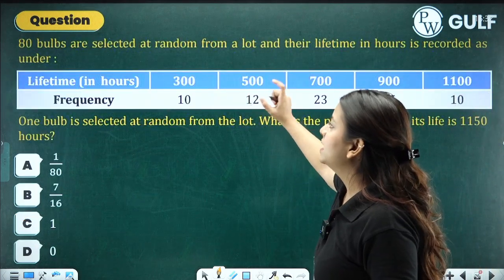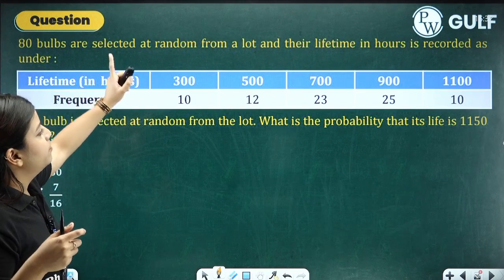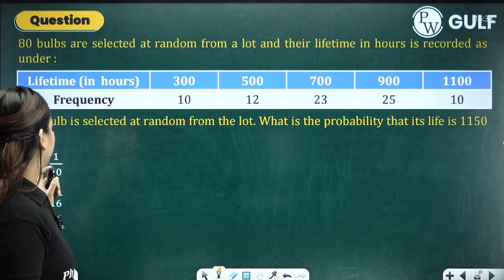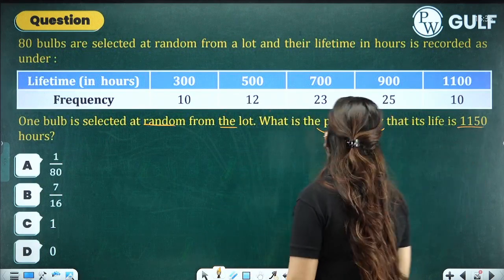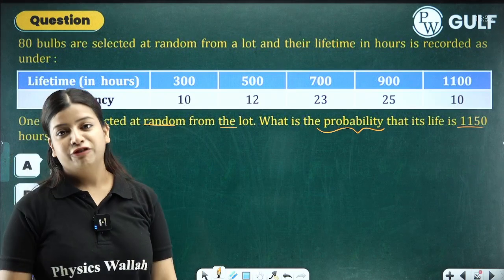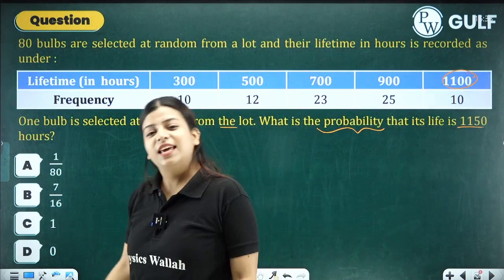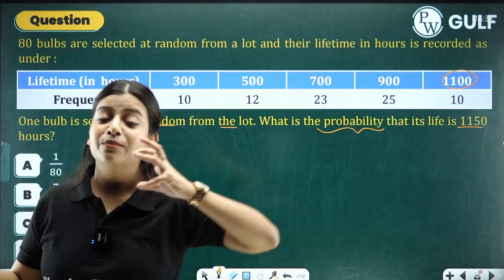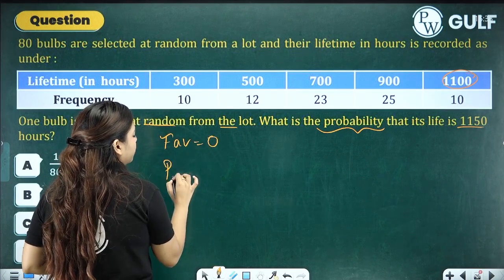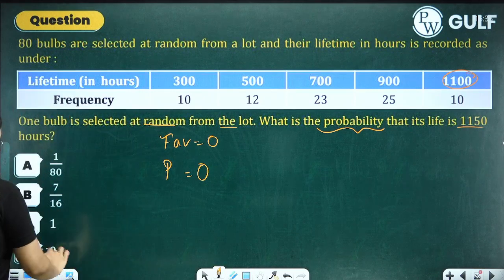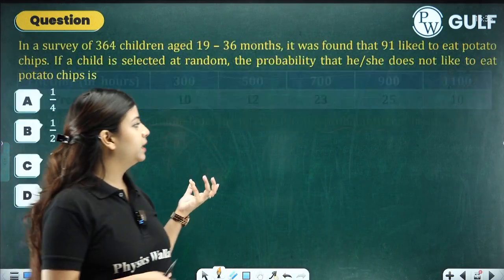80 bulbs are selected at random from a lot and their lifetime in hours is recorded. One bulb is selected at random. What is the probability that its life is 1150 hours? The bulb with the maximum number of hours in the data is 1100. So can you select something more than 1100? No. Therefore, favourable outcomes = 0, and probability = 0.